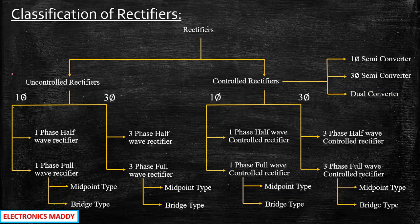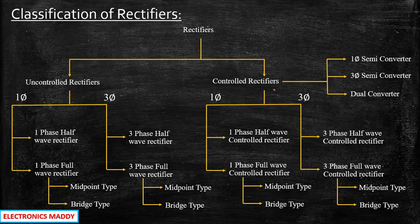So those are the classifications with respect to rectifiers. We will be looking at each one of these, starting with uncontrolled rectifiers and gradually moving to controlled rectifiers, which is the main area of focus. I hope this video gave you a clear understanding of what rectifiers are and their classification. Feel free to reach out with any questions in the comment section below. Thanks for watching and keep supporting!